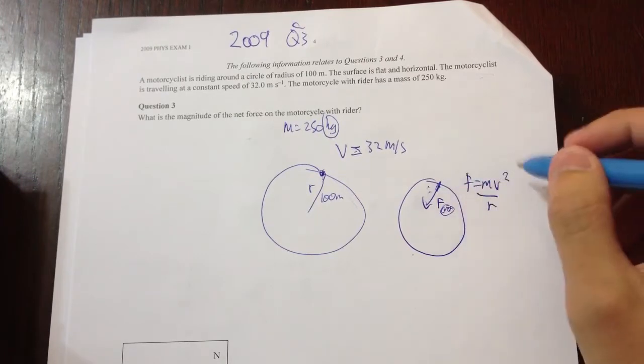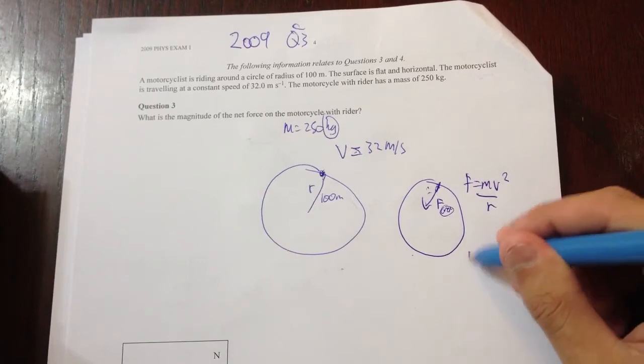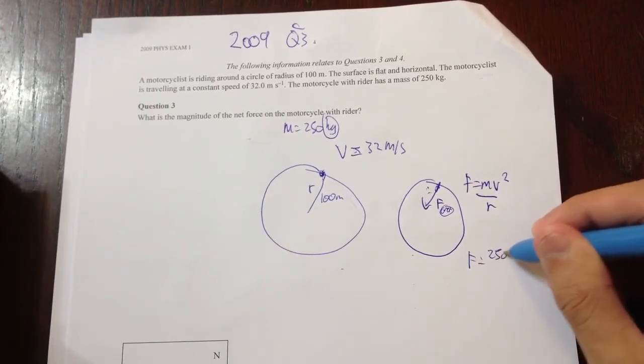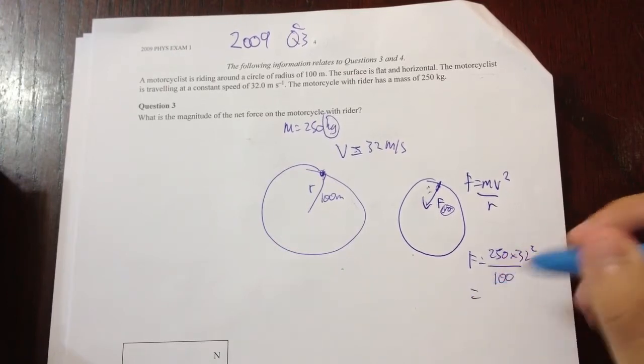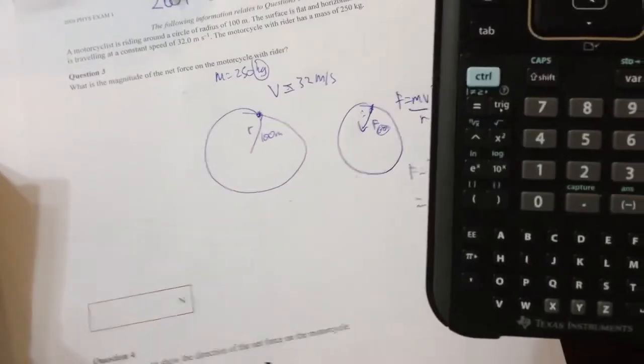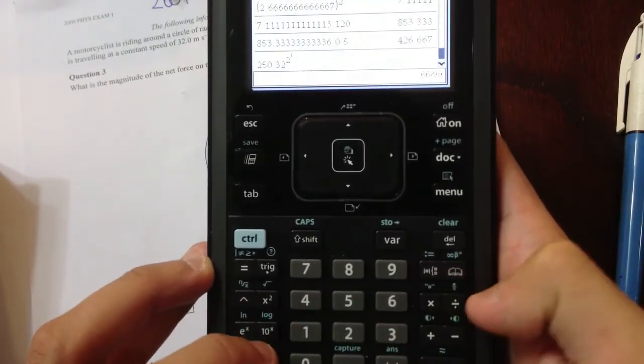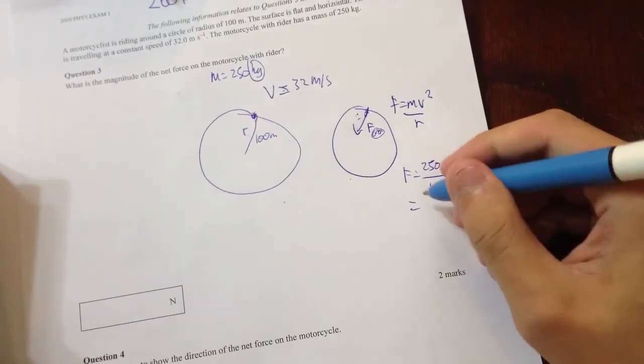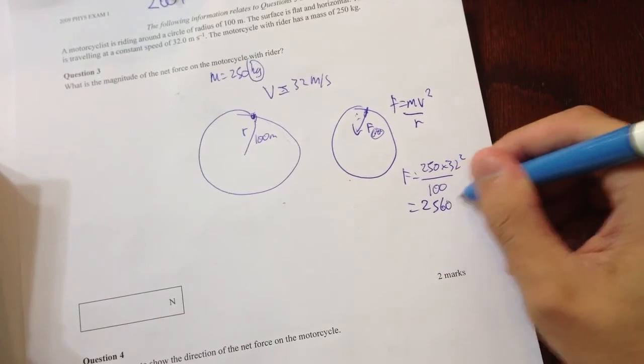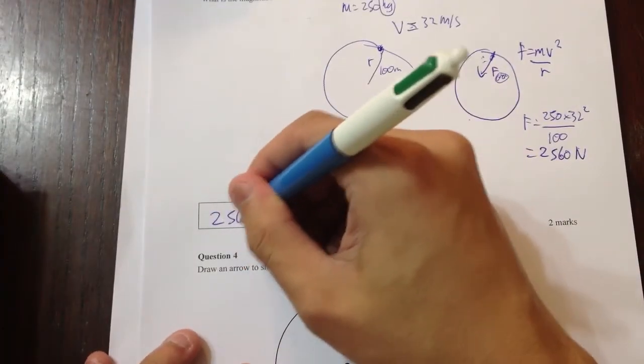Let's go in a circle. Therefore, this m force equals 250 times 32 squared on 100 equals... 250 times 32 squared divided by 100... 2560 Newtons. 2560. All right, great.